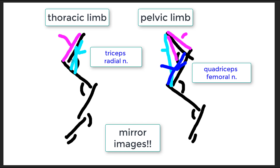The analog in the thoracic limb is a muscle running from the distal scapula to the olecranon, with additional muscles from the proximal caudal humerus also inserting on the olecranon — this is the triceps, innervated by the radial nerve. The triceps extends the elbow joint. So the quadriceps femoris and triceps brachii are essentially mirror images: the quadriceps innervated by the femoral nerve and the triceps by the radial nerve.